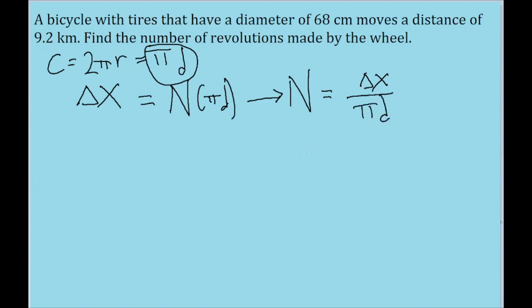Now let's just plug in the values given to us to find the number of revolutions. Our delta x is given as 9.2 kilometers, so I'm going to convert that to meters by multiplying by 1,000. So that's 9,200 meters divided by pi times the diameter of the wheel, which is given as 68 centimeters. So in meters, that's going to be 0.68 meters.